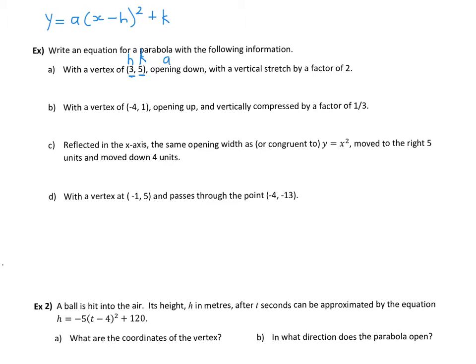Because it's opening down, we know a has to be negative, so a is less than 0. It also has a vertical stretch factor of 2, so a has to be 2. But combined with the fact that it's negative and 2, we know that our equation, the a value has to be negative 2, and then we're going to have our x minus h, which is 3, the x coordinate of the vertex, all squared, and then plus k plus 5, the y coordinate of the vertex. And we're done.